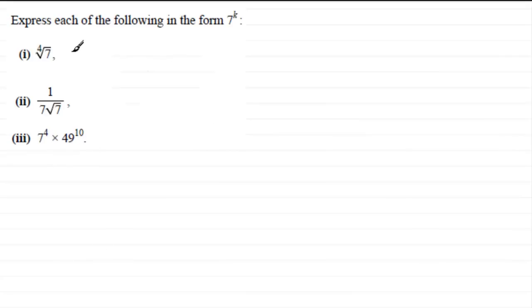Now to be able to write the first one in the form 7 to the k, we've got to remember the nth root rule of a number. If you're unfamiliar with that, it's just very briefly x to the power 1 over n is equal to or equivalent to the nth root of x. So if we pick up on that rule here, you can see that n is the 4 and x is the 7, so this is going to be equal to 7 to the power 1 quarter.